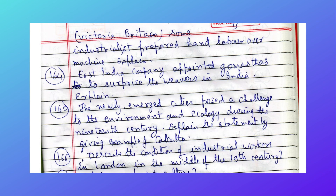In Victorian Britain, some industrialists preferred hand labour over machines — explain that. The East India Company appointed go-masters to supervise the weavers in India — explain. How did newly emerged cities pose a challenge to the environment and ecology during the 19th century? Explain by giving an example of Calcutta.